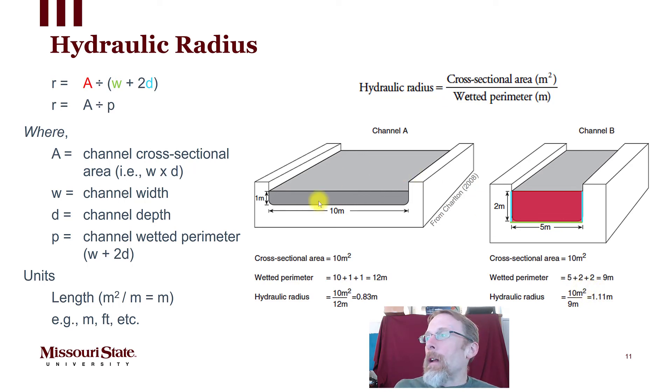Now both of these channels have the same cross-sectional area. Channel A is 10 meters wide and 1 meter deep, once again 10 square meters. Channel B is 10 square meters but it's twice as deep and half as wide, and they have a different hydraulic radius. So hydraulic radius is really looking at how big a perimeter the area is distributed across. It's the same cross-sectional area but it's distributed across a different perimeter. This has to do with something we call hydraulic efficiency.